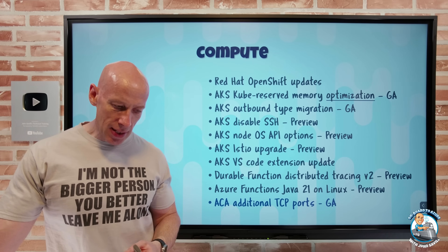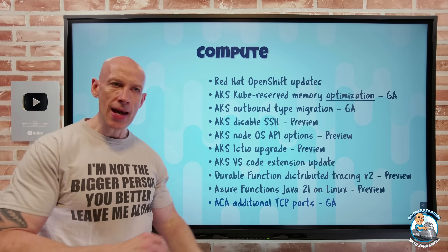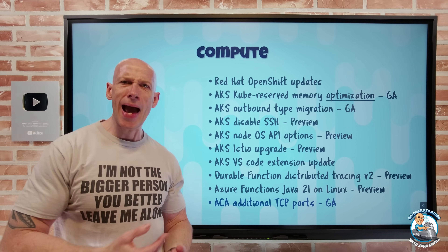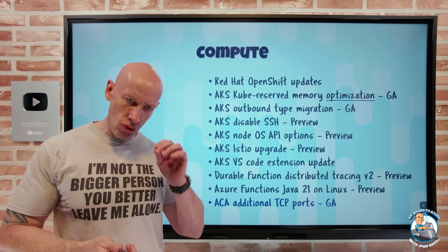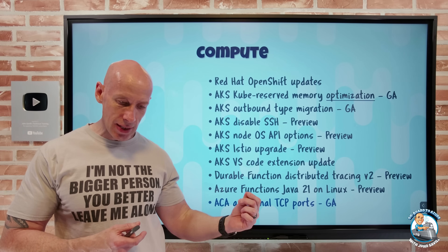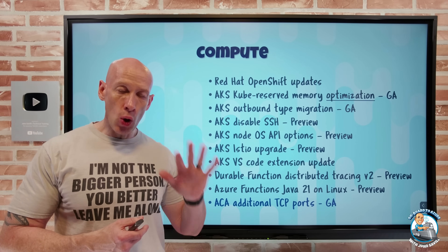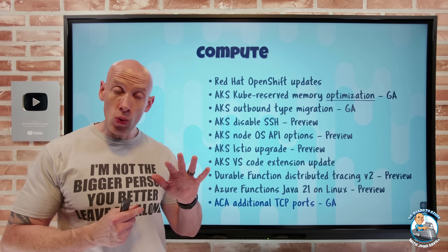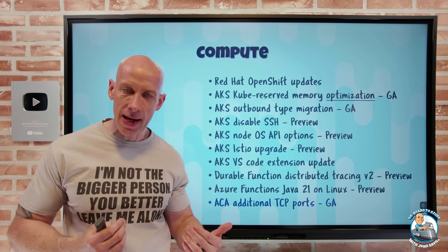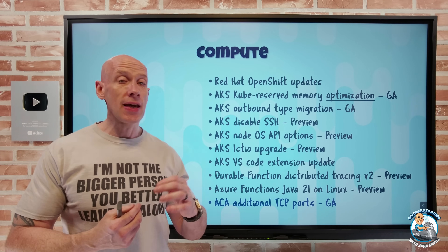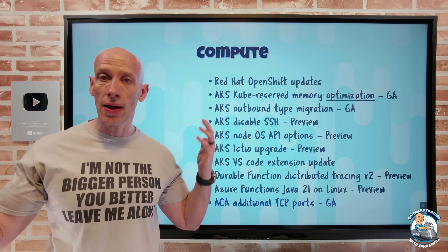Azure Container Apps is built on AKS but abstracts it away, adding things like DAPR, KEDA, and network capabilities so you can focus on your microservices. Now I can have an additional five ports, though those five ports must be unique across the environment - if I have multiple apps running in my ACA environment, they can't use the same five ports, but I can have five additional ports leveraged.